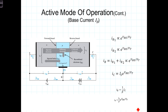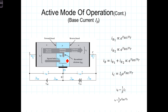Now let's consider the base current I_B. It consists of two components. The first component, I_B1, is the minority carrier diffusion current for the forward-biased base-emitter junction. It is a small current component because the doping concentration in the base is small, and it represents the diffusion current flowing from the base into the emitter. The second component, I_B2, corresponds to the small percentage of electrons emitted from the emitter into the base that then recombine. Because the base is relatively narrow and lightly doped, this recombination component is relatively small, but we include it in our calculation for I_B.